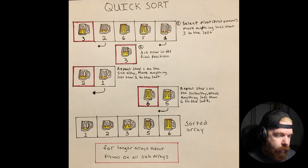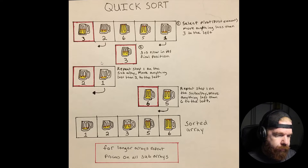So we're going to go through this list one by one looking for anything smaller than 3. Two is smaller than 3, so we move it to the left. Six — no. Five — no. One — yes. So one goes to the left as well. That puts 3 in the middle, 2 and 1 on the left, and 6 and 5 to the right. Three is now in its final position and won't move anymore.